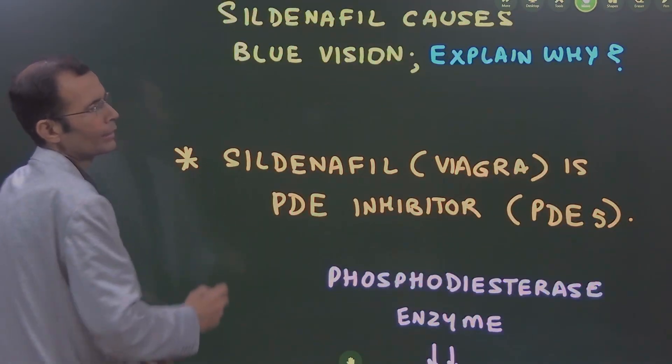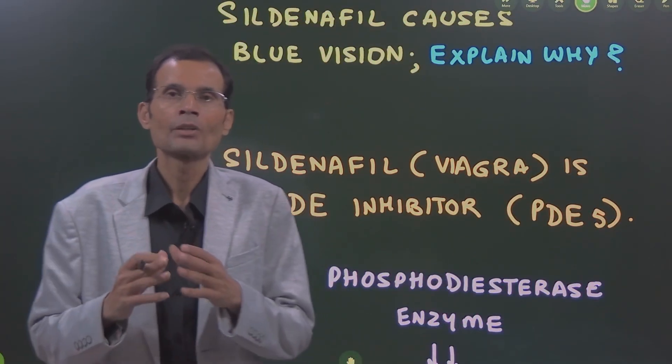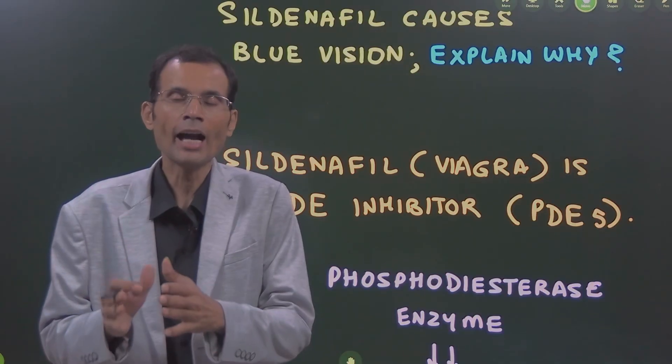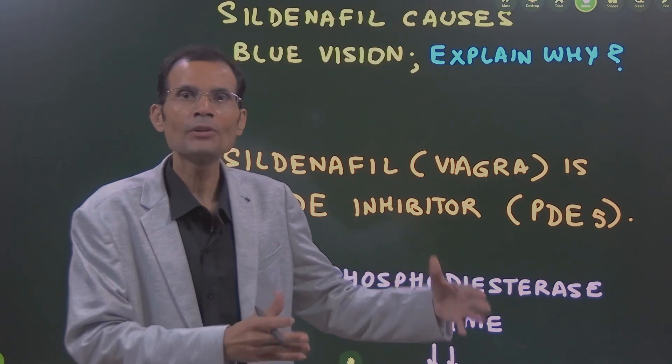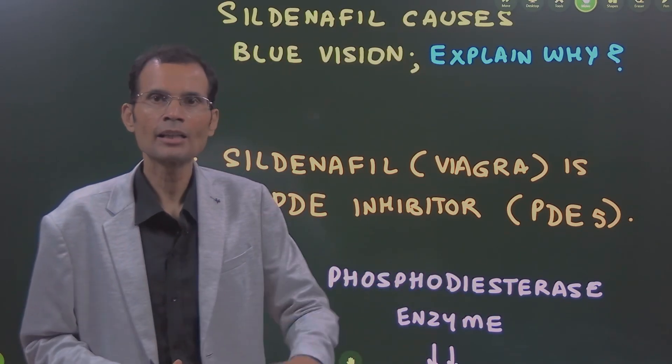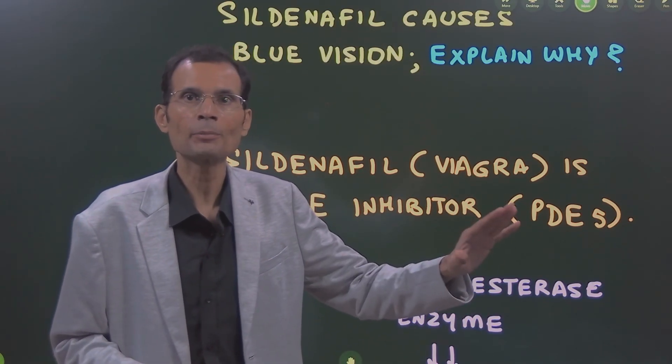Let's understand it in three parts. First, understand the drug and its mechanism of action. Then we will talk about color vision and link the two—why Sildenafil causes a particular type of color vision.